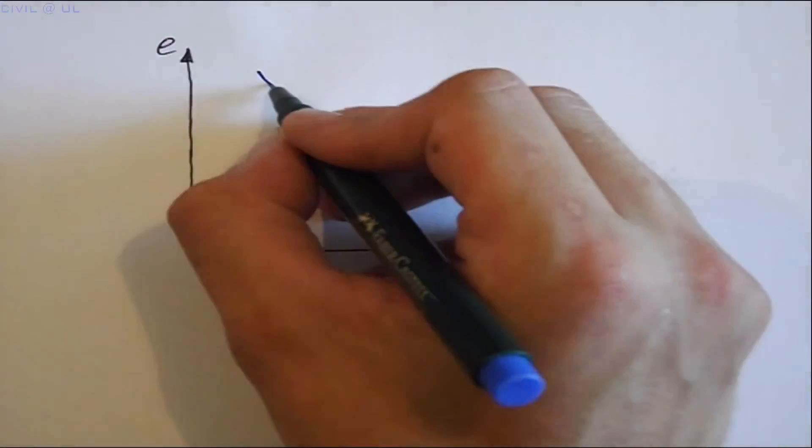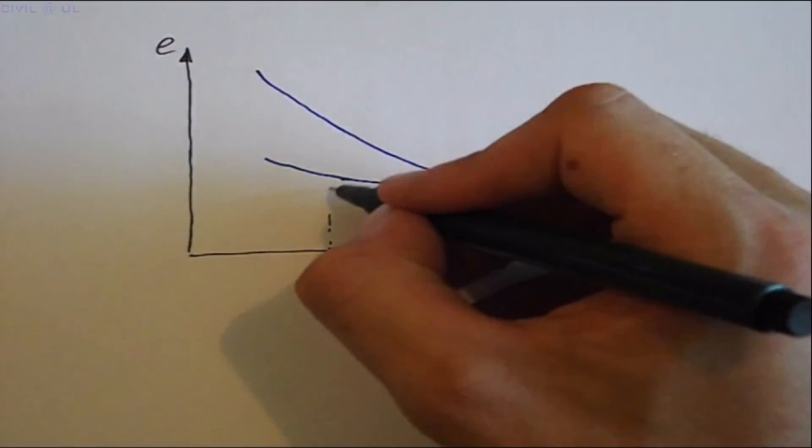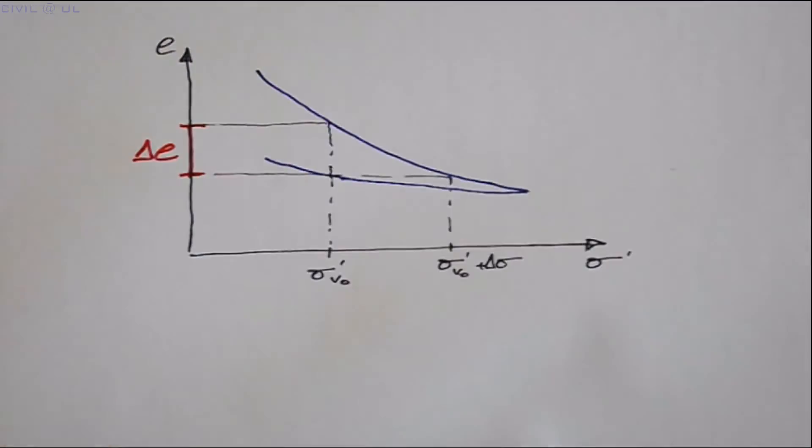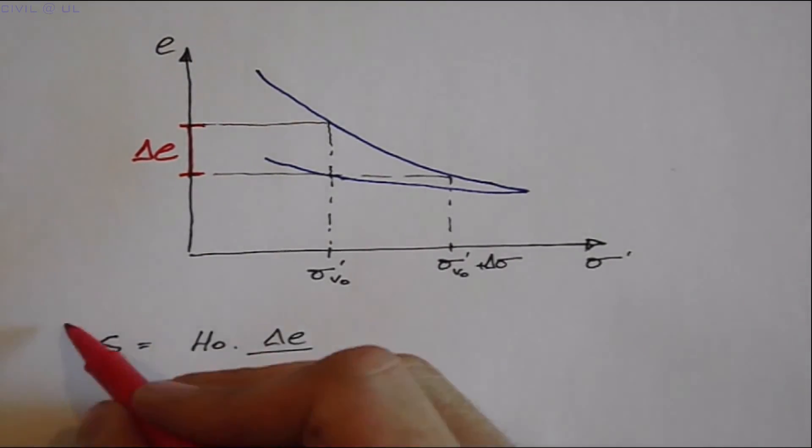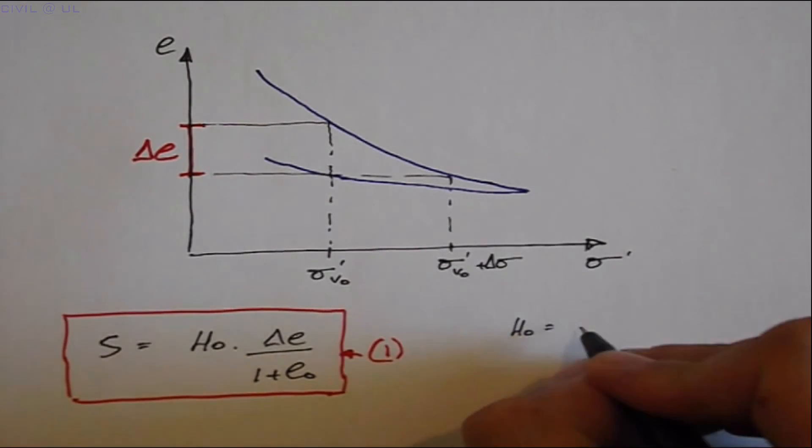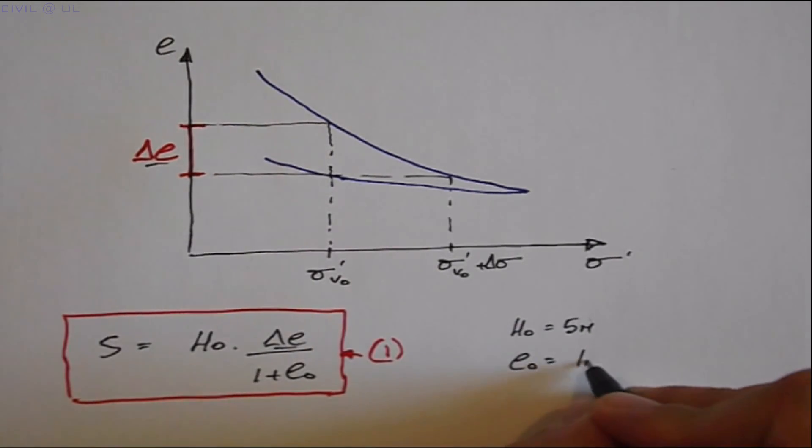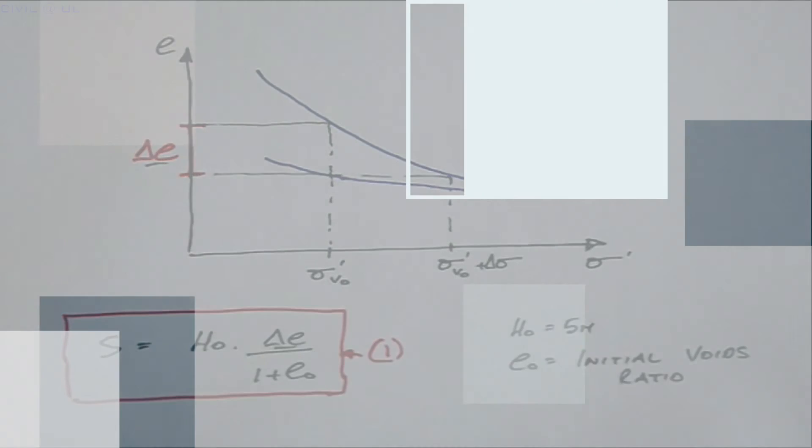Plotting these on the laboratory curve for the odometer test allows us to calculate the change in void ratio. Using this, we can estimate the consolidation settlement from the relationship established earlier, where H0 is equal to the initial thickness of the consolidating strata, delta E is obtained from our E stress plot, and E0 is the initial void ratio obtained from the odometer test.